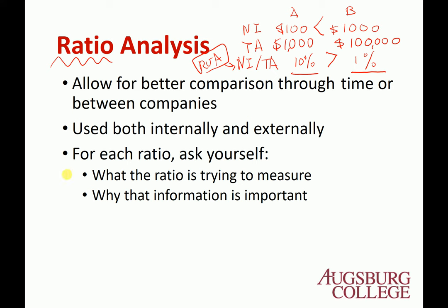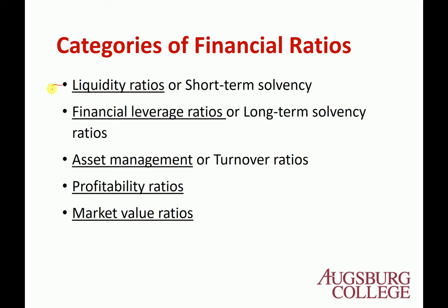For each ratio, you have two questions to ask: what is the ratio trying to measure — the meaning of the ratio — and why it is important. There are five different types of ratios. This is one way to categorize them; other textbooks may use different categories. We're going to look at them one by one: liquidity ratio, financial leverage ratio, asset management ratio, profitability ratio, and market value ratio.